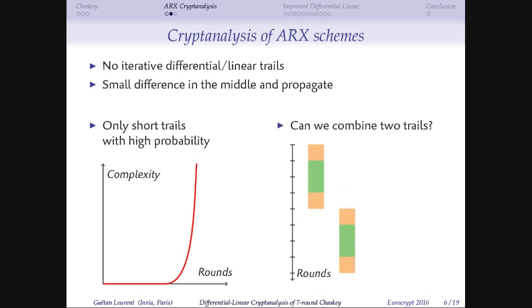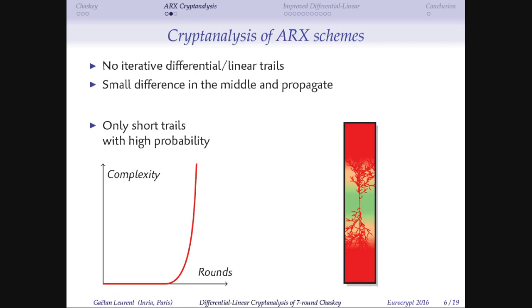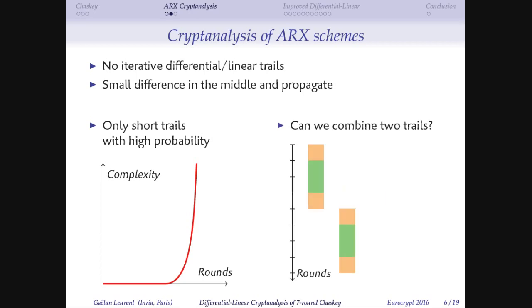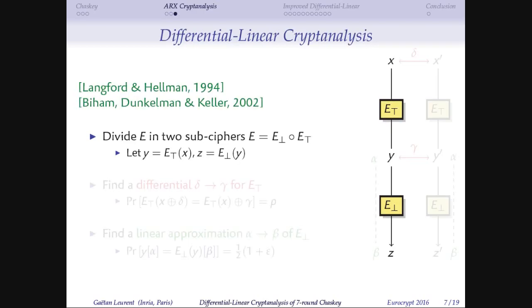Because of this property, it's interesting to look at techniques that combine two independent trails. One technique that does this is the boomerang attack — a very nice cryptanalysis technique where you combine two differential trails. Unfortunately, we cannot use it on Chaskey because we have no decryption oracle. However, another technique that does something similar is differential linear cryptanalysis, and that's what we're going to use here.